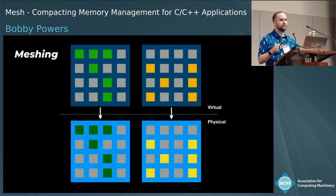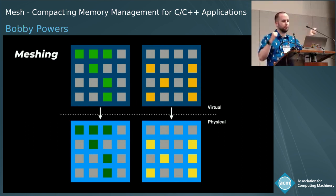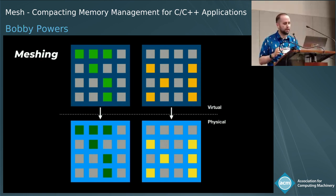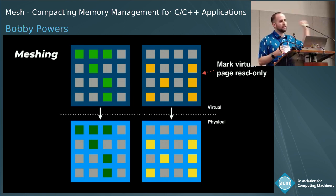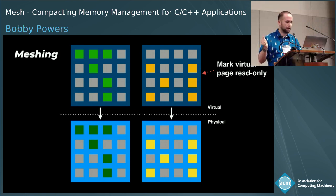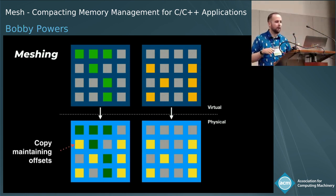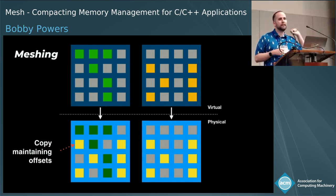Let's walk through what this looks like. On the top we have the virtual pages that programs interact with through pointers, and on the bottom we have the physical pages where objects are stored in memory. When we have two pages eligible for meshing, we first mark one of them as read-only so that concurrent threads don't update objects while we are compacting them. Next, we copy objects from one physical page to the other while maintaining the offsets of those objects from the start of the page.